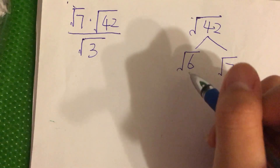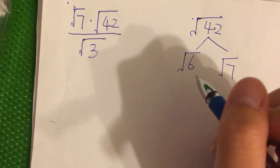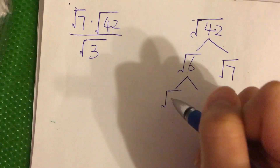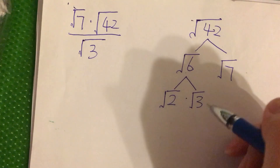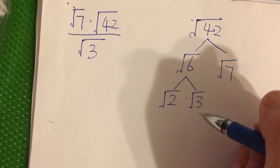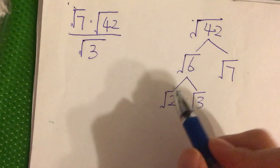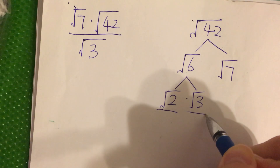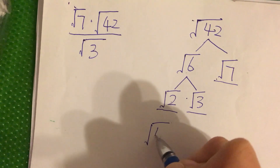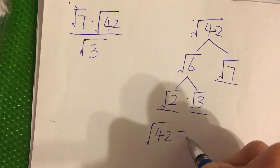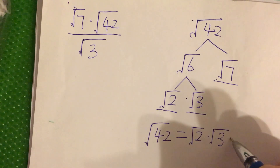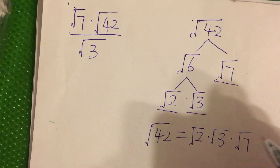Square root of 6 is also composite, so we can simplify it again. It gives us square root of 2 times square root of 3, since 2 times 3 equals 6. So square root of 42 can be separated into square root of 2 times square root of 3 times square root of 7.